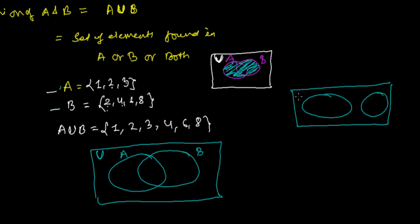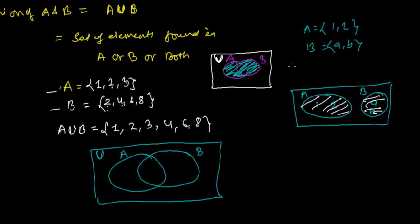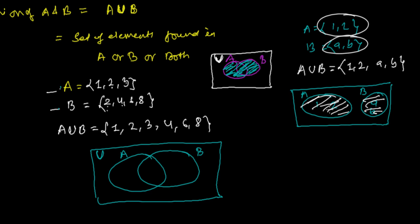For a disjoint set example, let's say A = {1, 2} and B = {a, b}. Since nothing is common between them, we write 1 and 2 in set A's circle and a and b in set B's circle. Then A ∪ B is simply {1, 2, a, b} — all elements from A and from B, since nothing is shared between them.